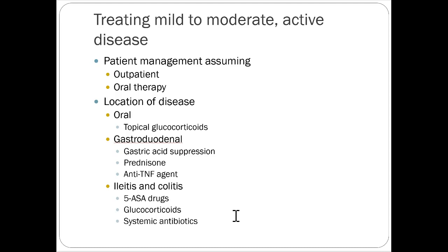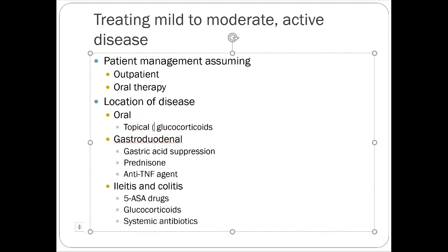For treating mild to moderate active Crohn's, the algorithm focuses primarily on topical glucocorticoids, meaning budesonide. For more severe disease not responding to prednisone, you escalate to the moderate-to-severe category where anti-TNF agents come into play. In very limited distal disease, 5-ASA drugs or possibly antibiotics could be considered, but that would be a rare case and is more applicable to ulcerative colitis patients.